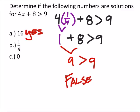Now, if it had the line underneath it, it would be true. But this one is false because nine is not actually greater than nine.